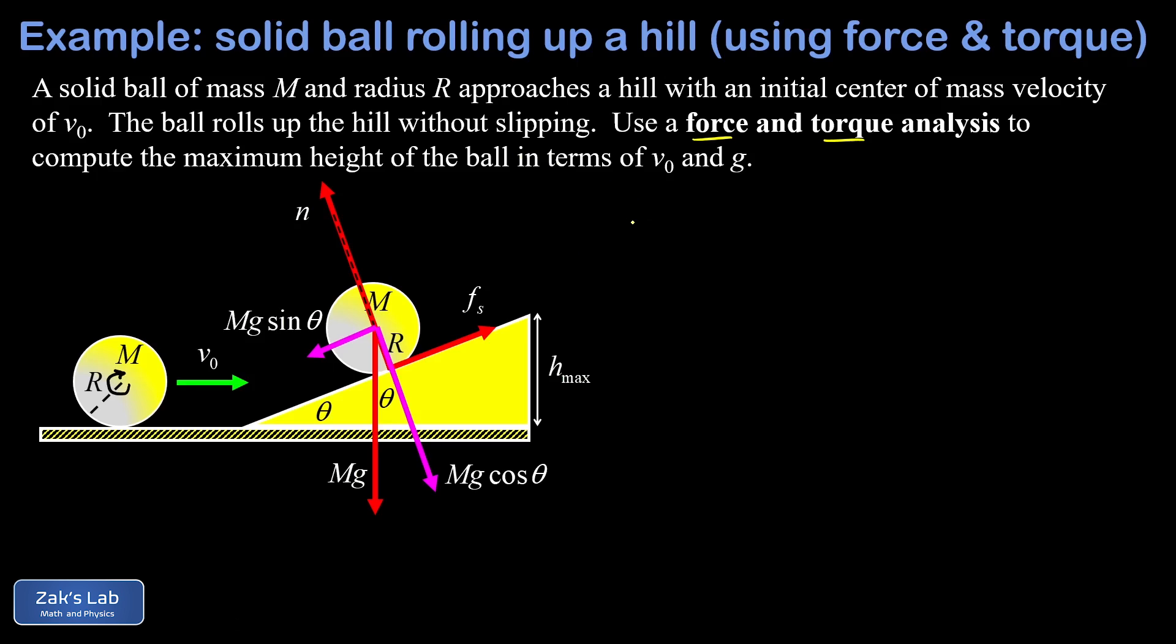So let's go ahead and start with the analysis of forces in the parallel direction. So we'll just write that as F parallel. And for this analysis I'm going to choose down the ramp as the positive direction because the ball is slowing down and I know the actual physical acceleration points down the ramp. Things are a little bit simpler if you make the actual direction of acceleration the positive direction.